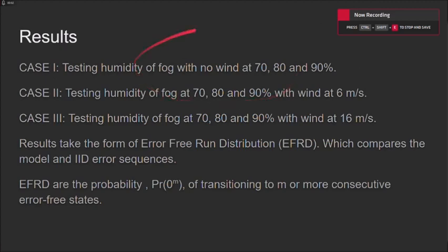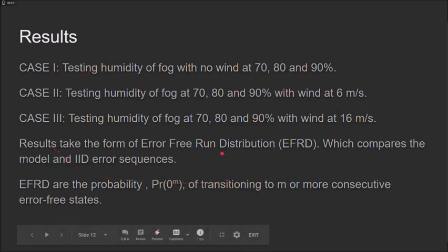In simulating our results, we used three test cases using 70, 80 and 90% with no wind, a slow wind speed of 6 meters per second and a high wind speed of 16 meters per second. The results take the form of an error free run distribution, which is the probability of transitioning to m or more consecutive error-free states.